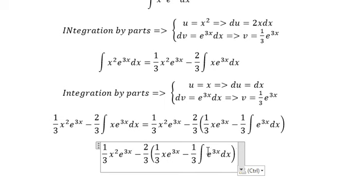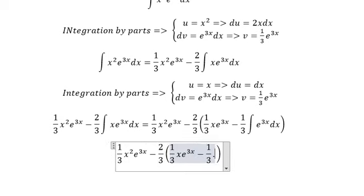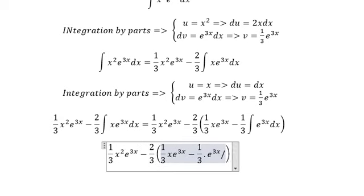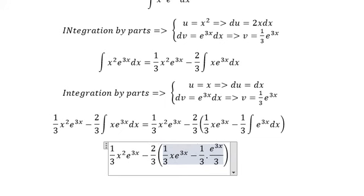In this one, we have the integral of e power 3x dx. So we can put e power 3x over 3. And we can put c outside.